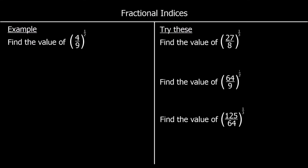Here's another different type of question: 4 ninths to the power of a half. When we've got a fraction raised to the power of a half, that's the same as square rooting the top and square rooting the bottom. So for 4 ninths to the power of a half, we square root the top — square root of 4 is 2 — and we square root the bottom — square root of 9 is 3. So 4 ninths to the power of a half is 2 thirds.